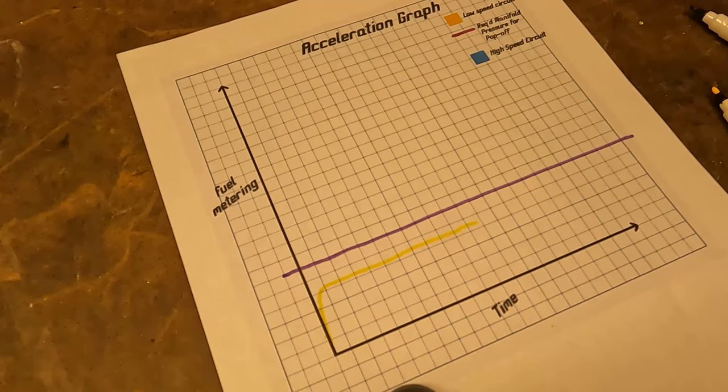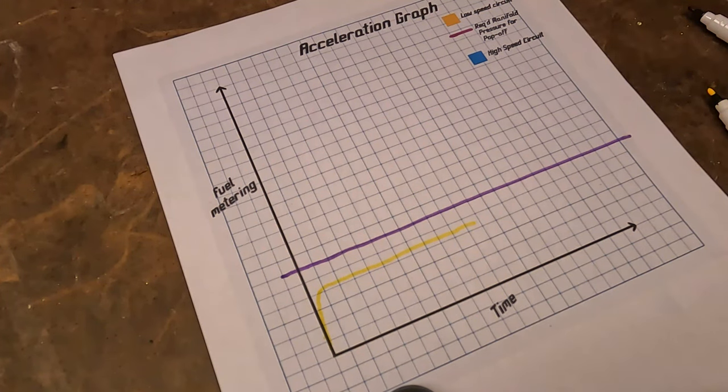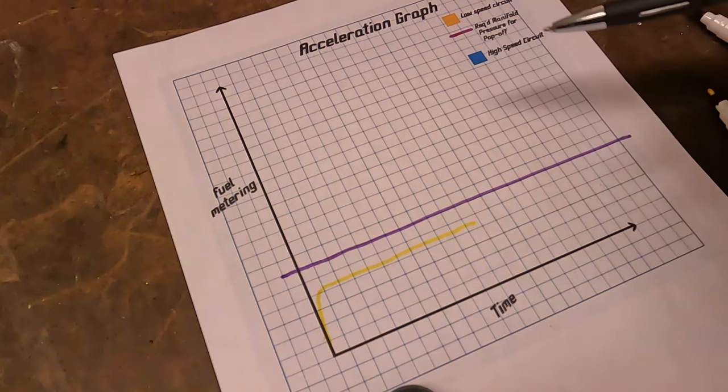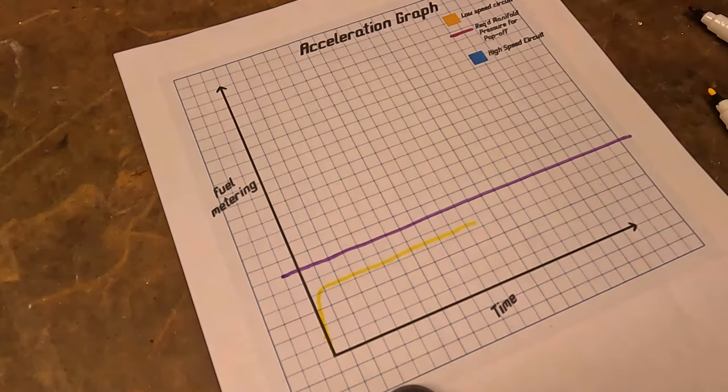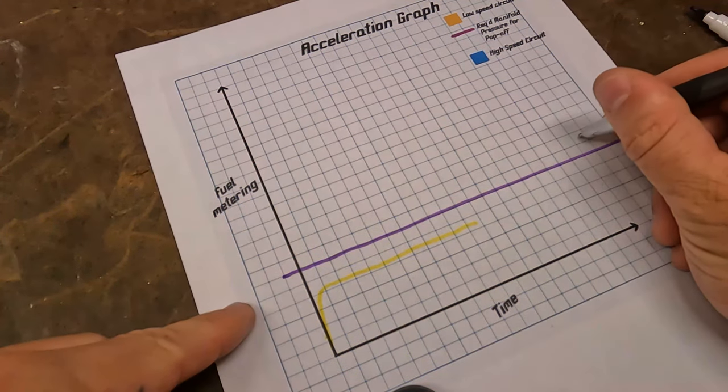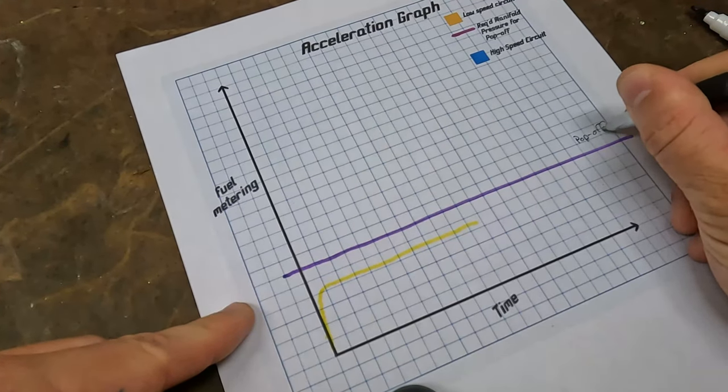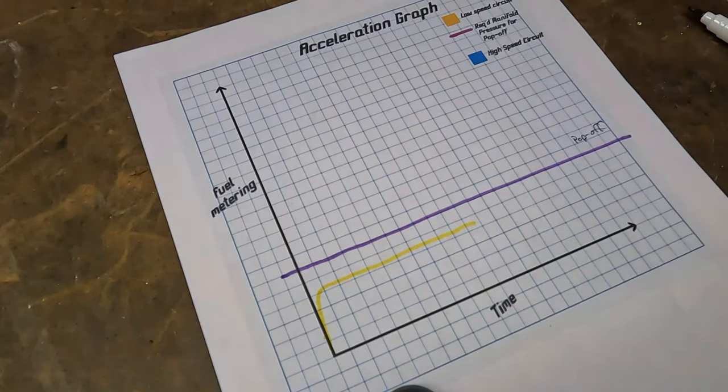I created this graph to help you better understand what it takes to achieve a smooth takeoff. On the y-axis we have the amount of fuel being metered, on the x-axis we have time. The yellow and the blue are going to represent the low and high speed circuit, and then this purple line is going to represent the amount of pressure required to reach pop-off and that is based on manifold pressure.